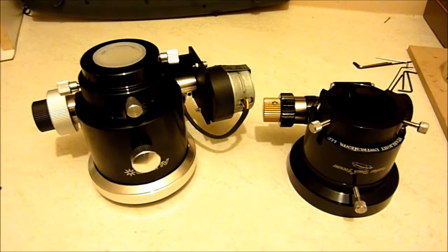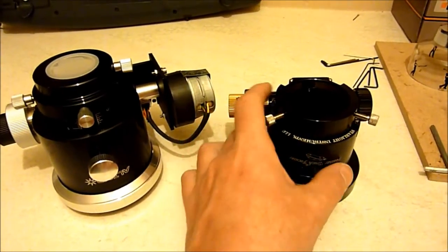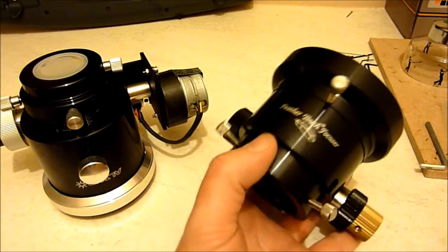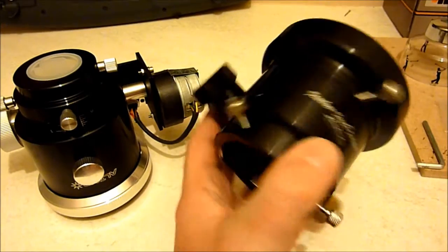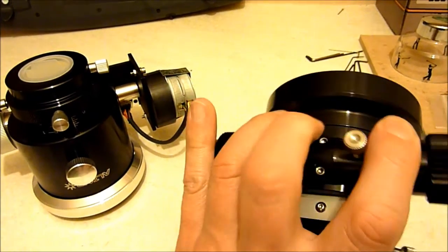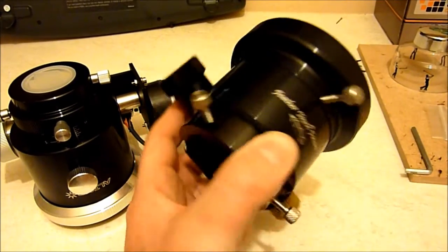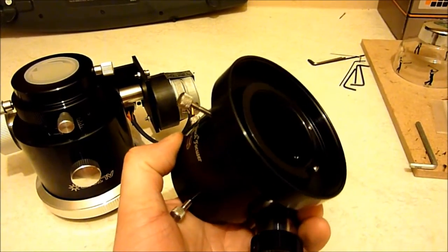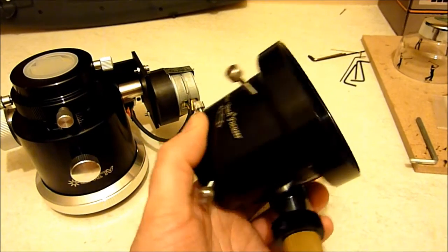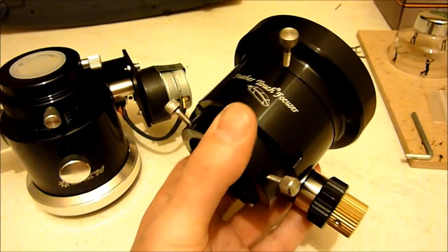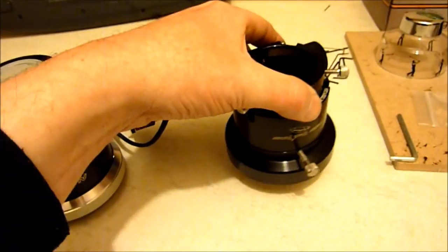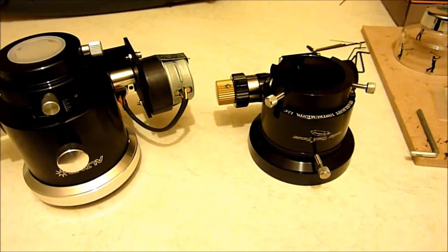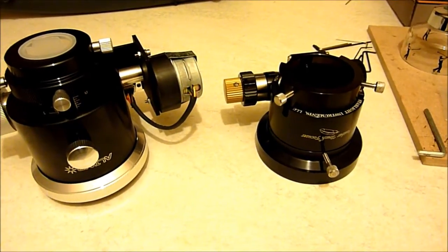So I decided to buy this 1.5 inch model draw tube Feather Touch focuser, which is supposed to be one of the best out there. The only thing that gets me is the price. With the adapter for this 8 inch GSO RC, it comes in at just under £400. I mean, God, £400—that was the sort of price I used to spend on an ED doublet, not just on a focuser.